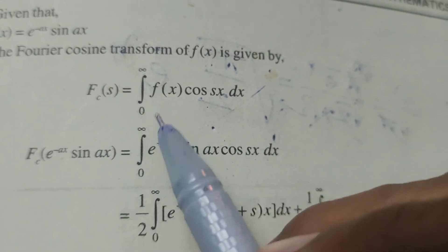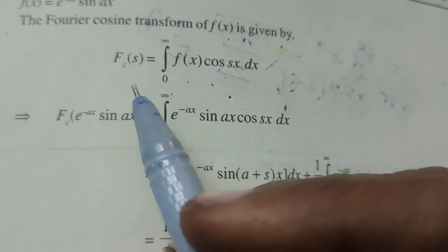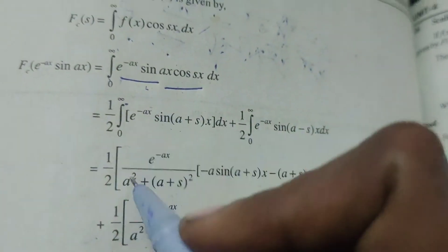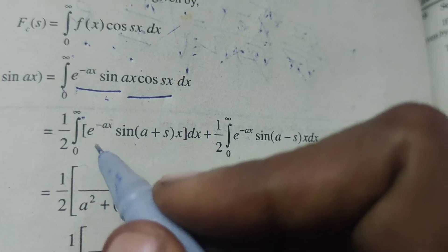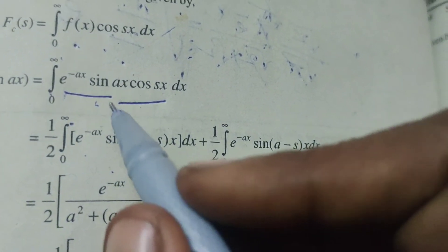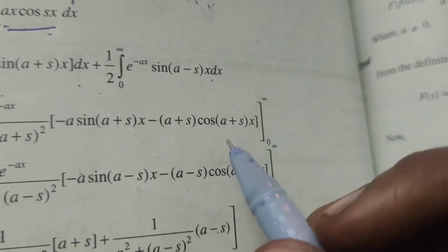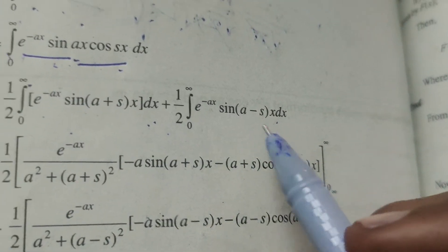Now find the Fourier cosine transform of e power minus ax sin ax. Given f of x equals e power minus ax sin ax. The Fourier cosine transform formula is fc of f of x equals integral from 0 to infinity of f of x cos sx dx. So applying the formula, and using sin a cos b equals 1 by 2 into sin of a plus b plus sin of a minus b, we write 1 by 2 into integral of e power minus ax sin of a plus s into x plus sin of a minus s into x dx.